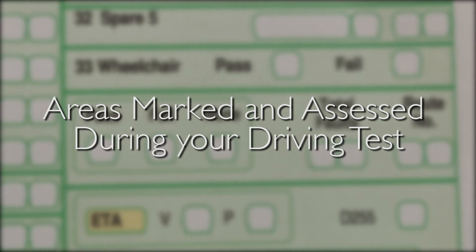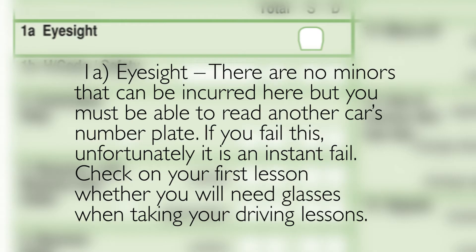Areas marked and assessed during the practical driving test. 1A: Eyesight. There are no minors that can be incurred here, but you must be able to read another car's number plate. If you fail this, unfortunately it is an instant fail.